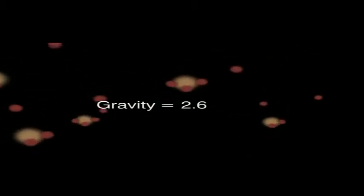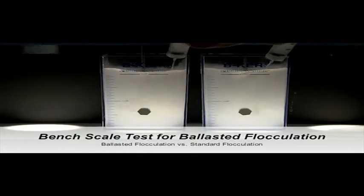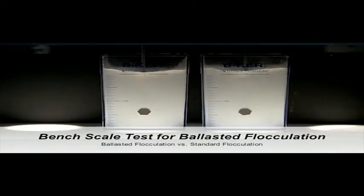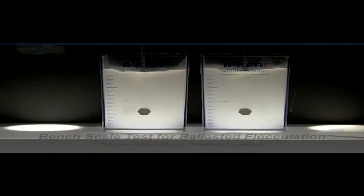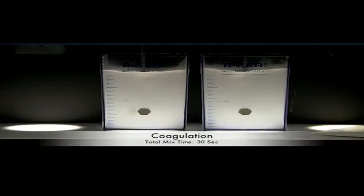The microsand has a specific gravity of 2.6 and is mixed with the polymer and coagulated solids to form a dense ballasted flock. This bench test shows two identical test samples containing raw water of 150 NTU turbidity. Both samples were treated with the same dose of chemical coagulant and polymer.